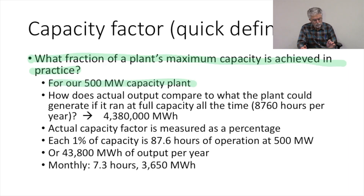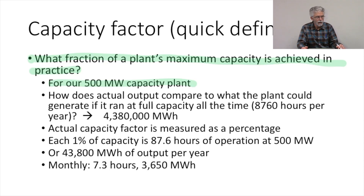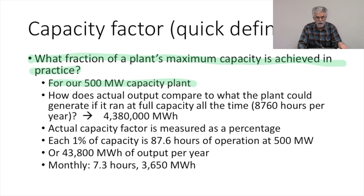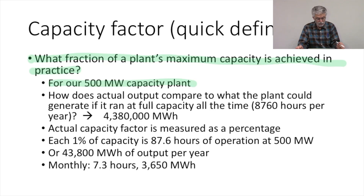Let's go back to our 500 megawatt power plant. How does the actual output compare to what the plant could generate if it were running at full capacity all the time? A year is 8,760 hours, so the maximum output you could conceivably get is if it were running at the full 500 megawatts for the full 8,760 hours a year — that would be 4,380,000 megawatt hours in the year. That would be the full capacity of the power plant.